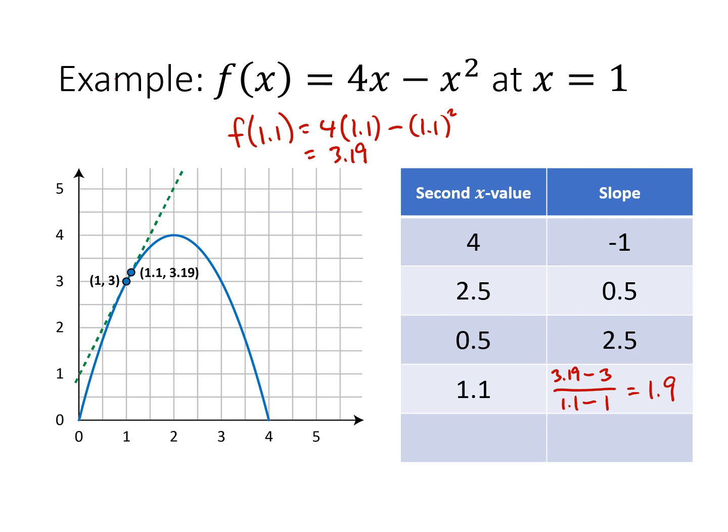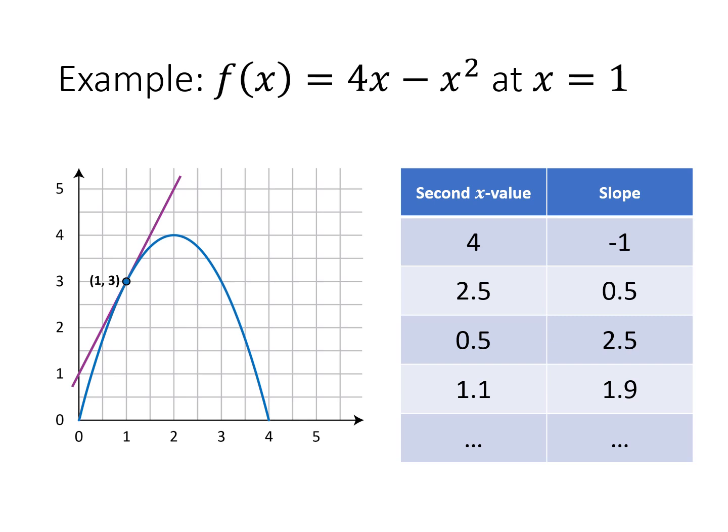We can keep doing this. There's nothing stopping us from continuing to move these two points closer and closer together. The closer together the two points are, the closer our secant line slope is to the slope of the tangent line we really want. At this point, we're kind of guessing — do we exactly know what the slope of that purple line is? Not yet. We're thinking that as we're getting closer, these are better approximations. So maybe the slope is 1.9, maybe it's 2, maybe it's somewhere in that neighborhood. We'd have to do more investigation to make an educated guess.